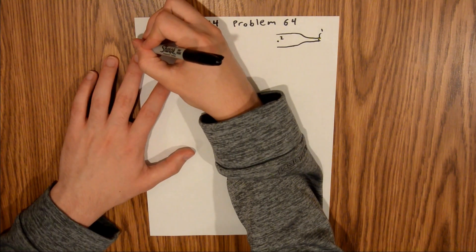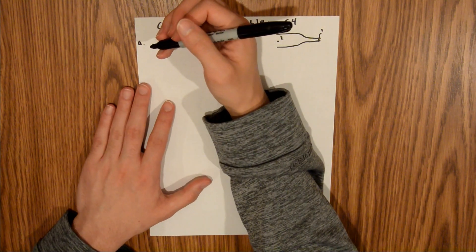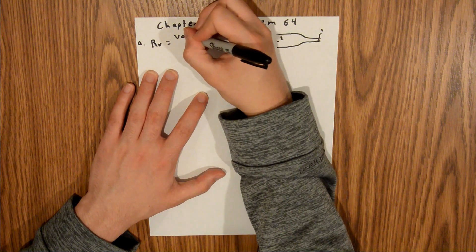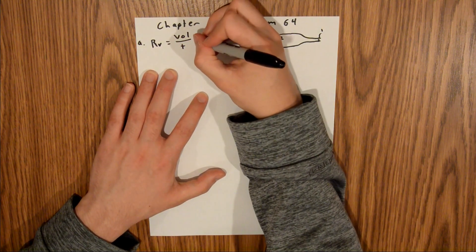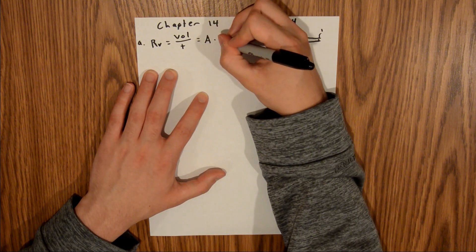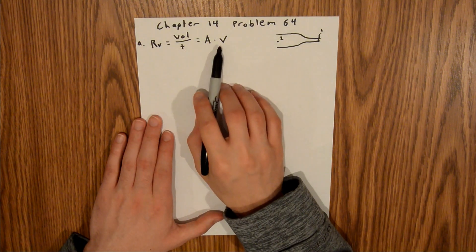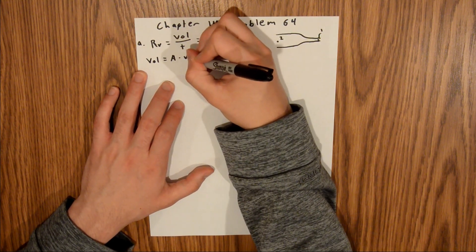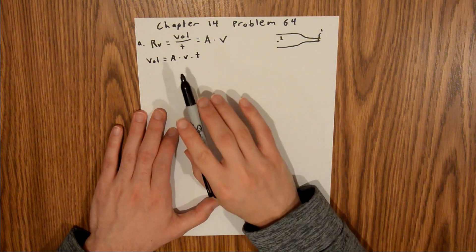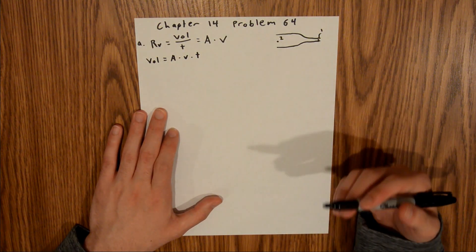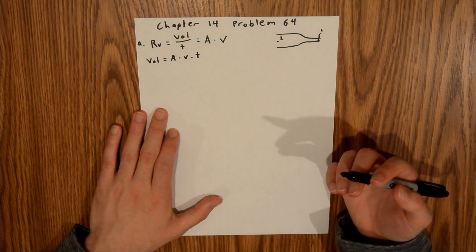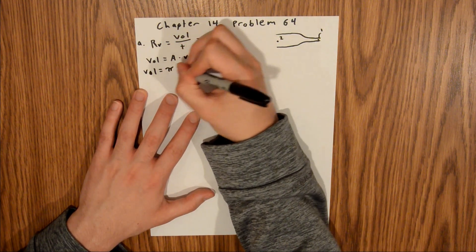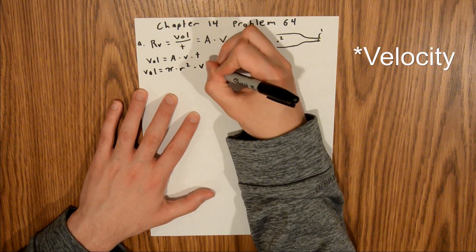For part A, we want to find the volume of water that flows out in a 10-minute period. The volume rate RV is equal to volume per time, which equals the cross-sectional area of the pipe times velocity. Multiplying both sides by T gives us volume equals area times velocity times time. Since we have a pipe, the cross-sectional area is a circle, so area equals pi times radius squared.